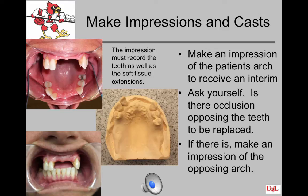The first thing you'll want to do is make an impression of the patient, recording all soft tissues as well as the teeth. You want that soft tissue to extend to the hamular notch if maxillary, covering the retromolar pad and into the retromylohyoid fossa if mandibular. Ask yourself if there is occlusion opposing the teeth to be replaced, whether you need an opposing arch impression, and whether occlusion rims will be needed to mount the case properly.